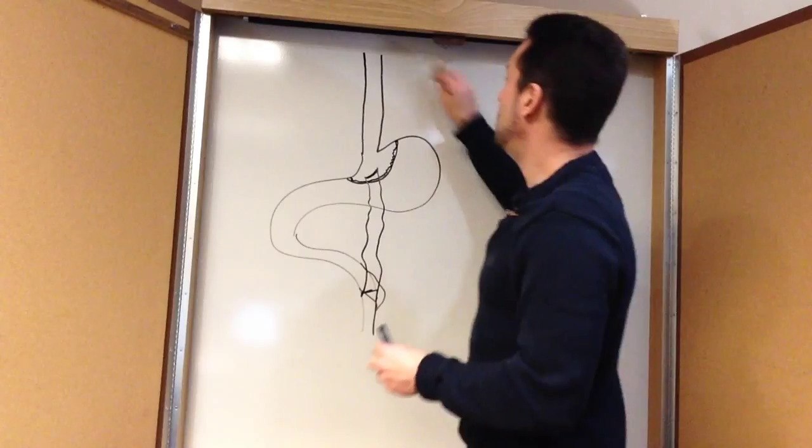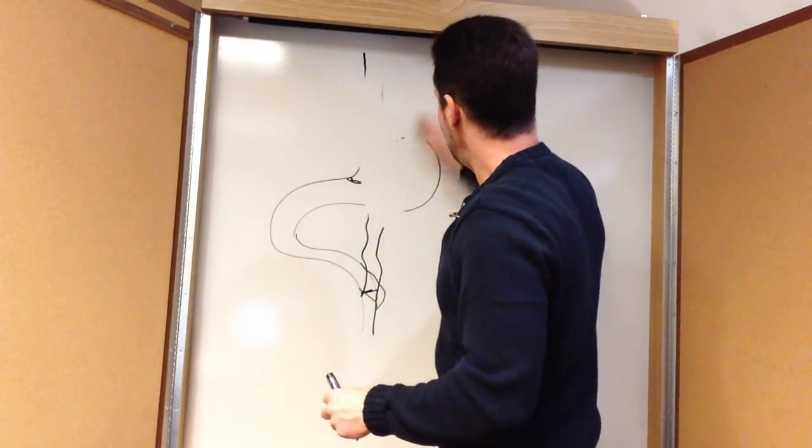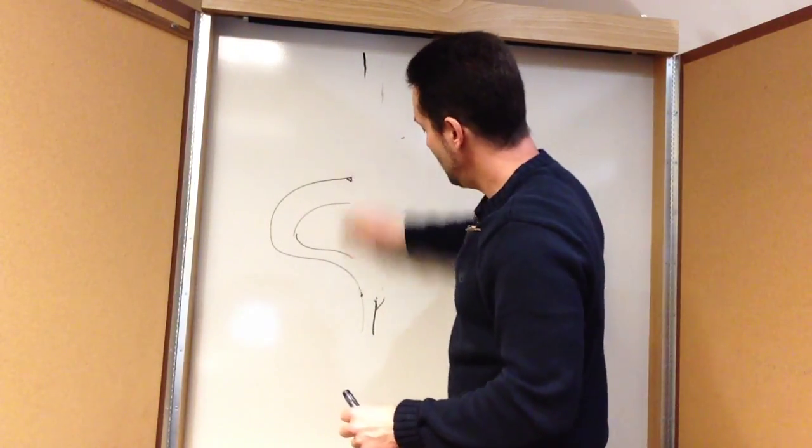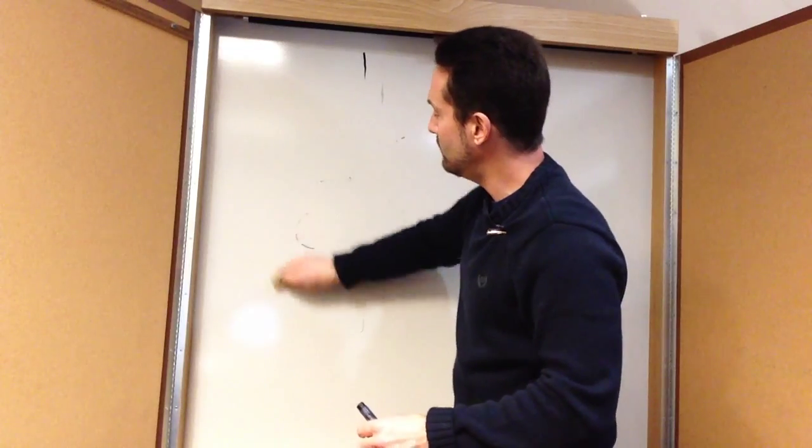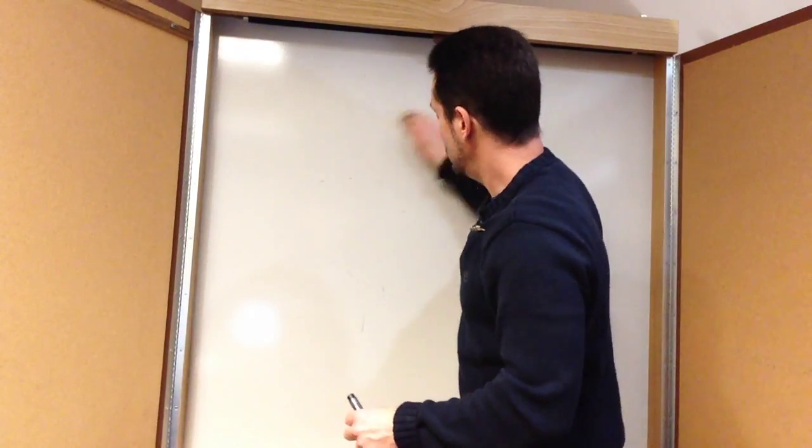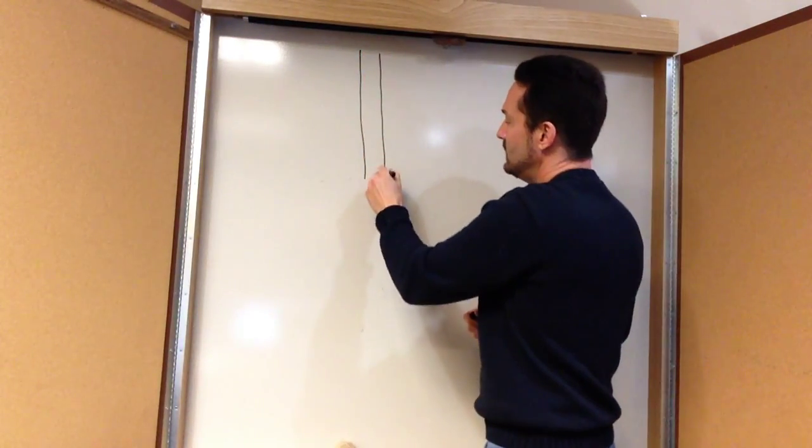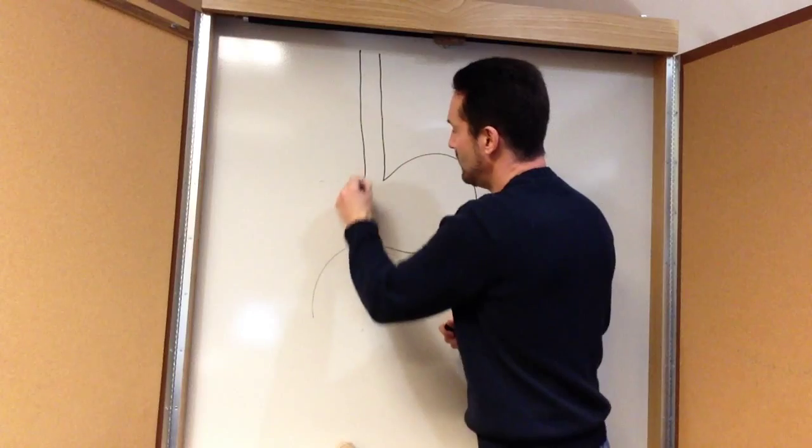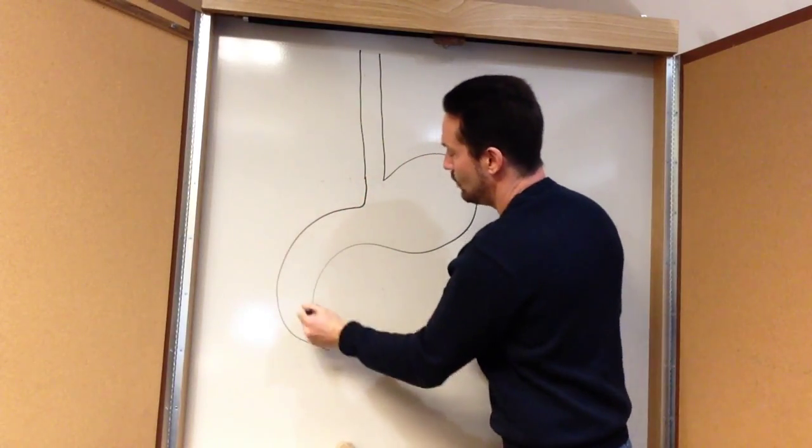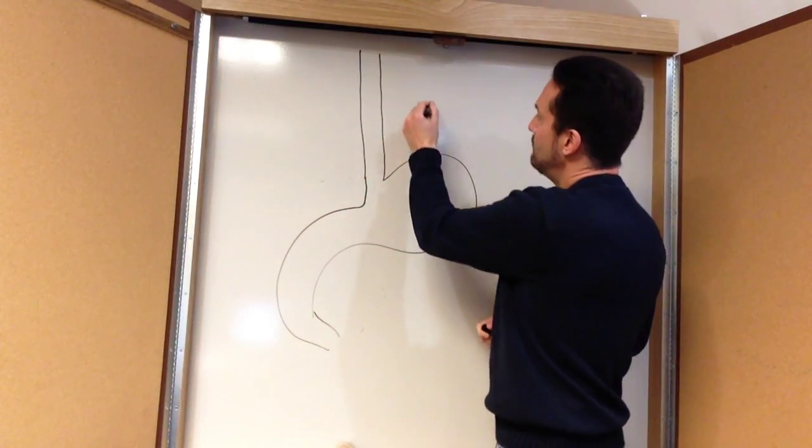We'll contrast that with the lap band, and lap band is way less invasive, a little bit different procedure, but much less effective. So in lap band surgery, you've got the esophagus, the stomach, the duodenum.